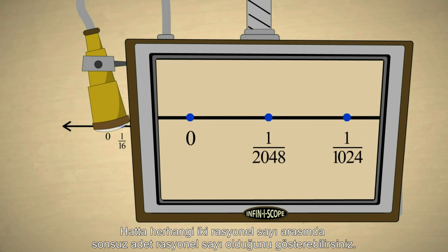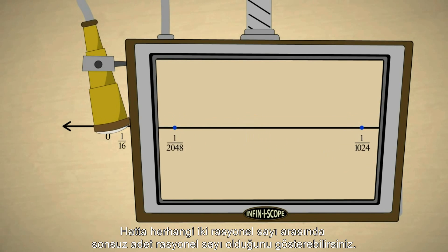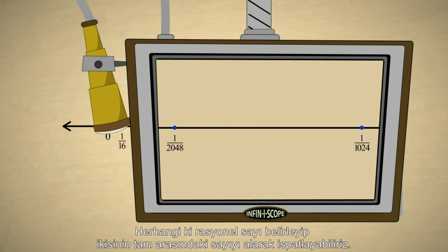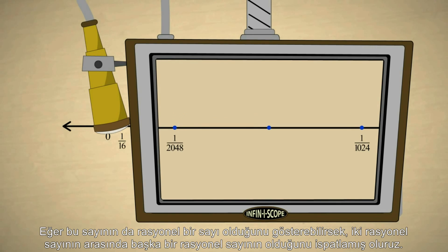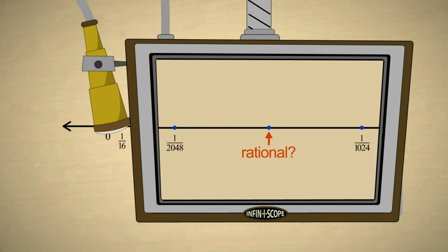In fact, you can also show that between any pair of rational numbers, there are an infinite number of rational numbers. You can prove this by starting with two arbitrary rational numbers and then calculating a number exactly halfway between them. If we can show that this number must also be rational, then we have proven that between every pair of rational numbers is another rational number.